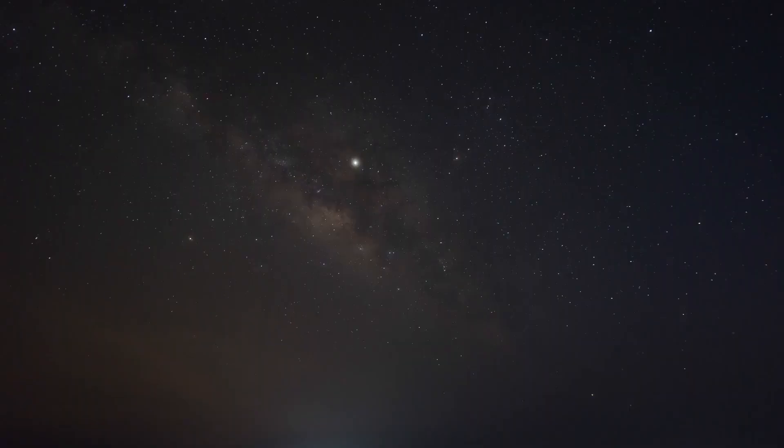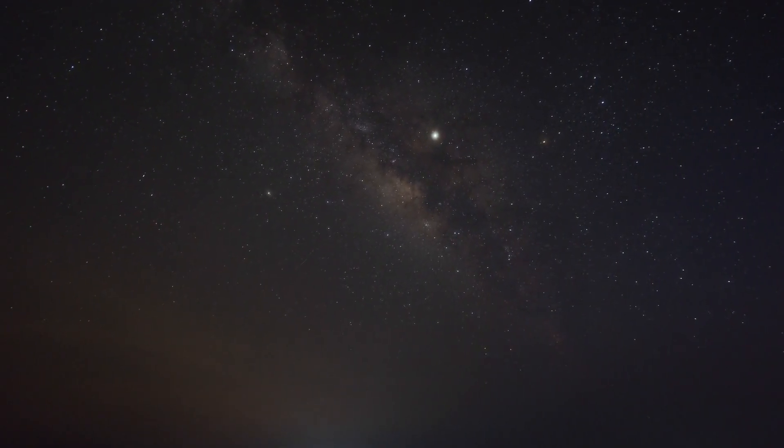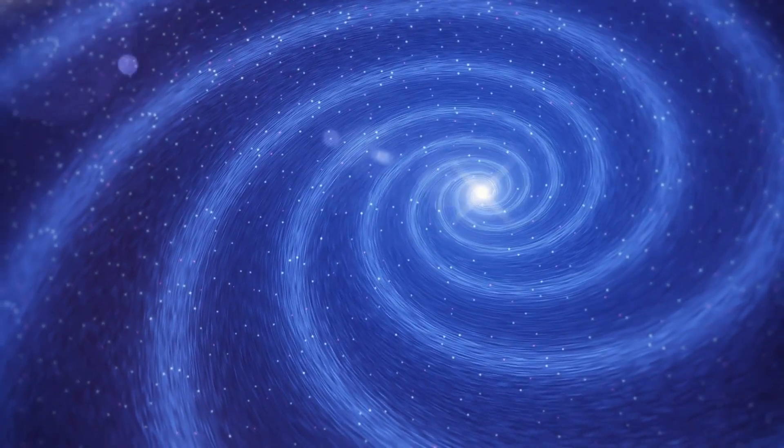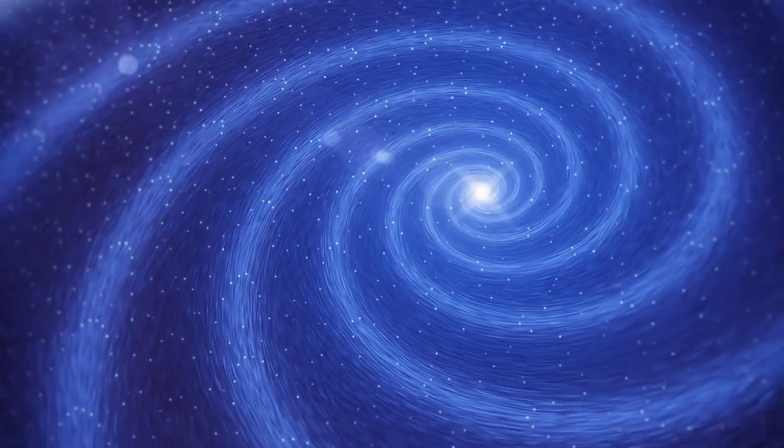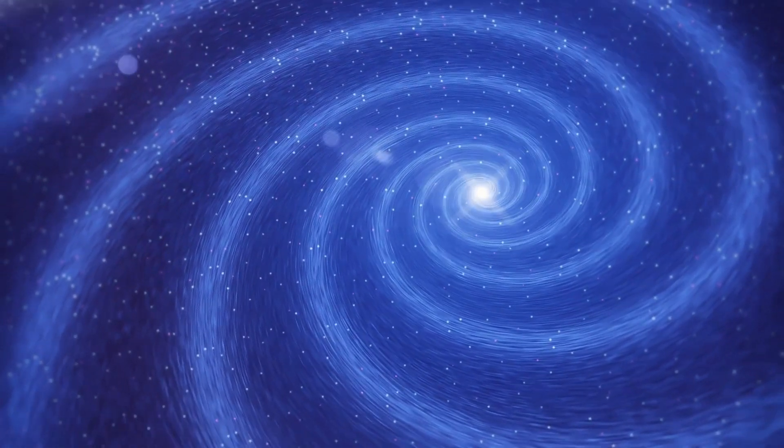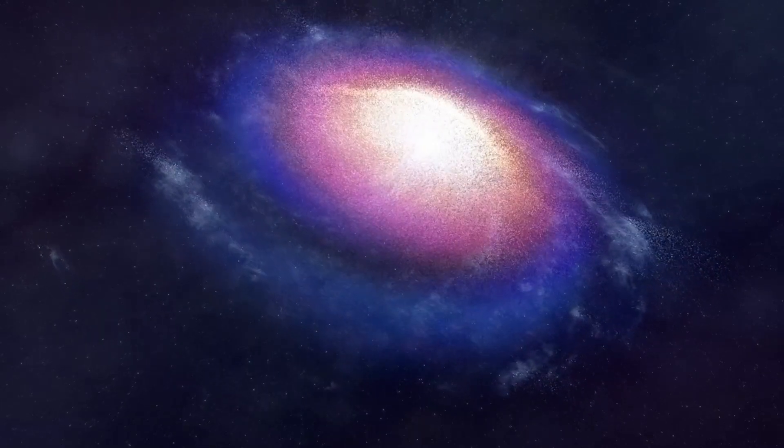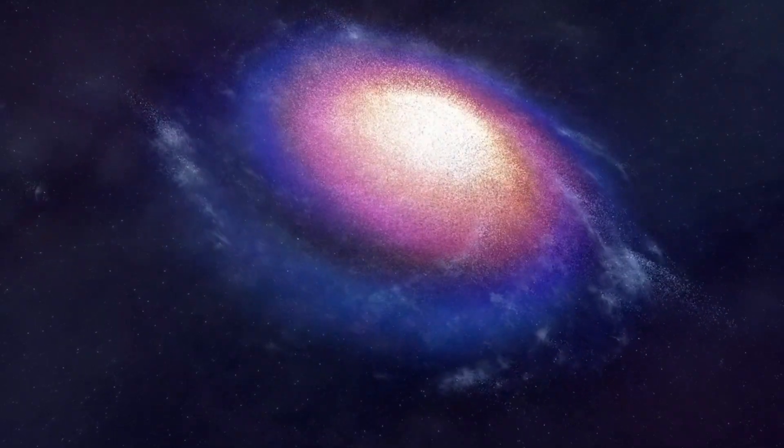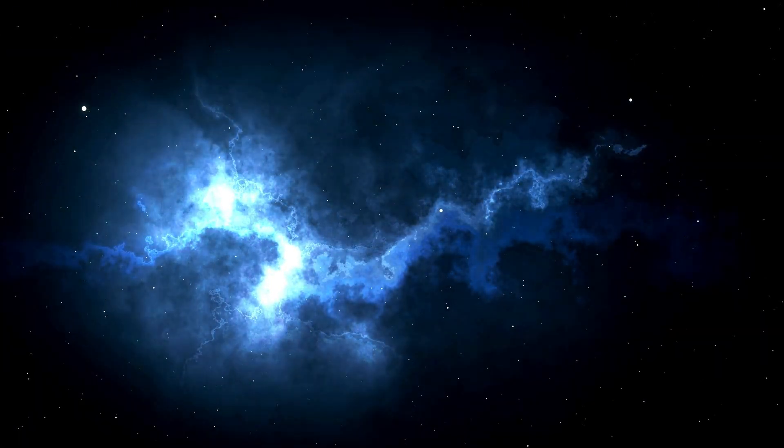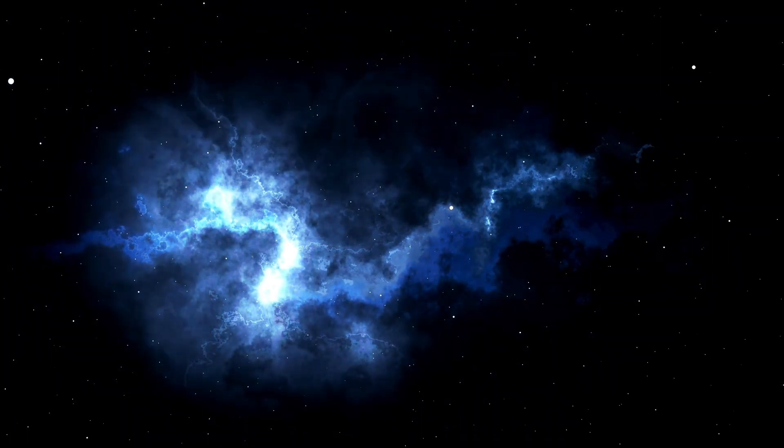The potential for Betelgeuse to become a supernova also intersects with our understanding of cosmic events on a larger scale. For instance, the study of supernovae aids astronomers in examining the circumstances leading to different types of explosions, such as Type I and Type II supernovae. Type I supernovae are typically the result of thermonuclear explosions in binary star systems, while Type II supernovae, like those expected from Betelgeuse, arise from the core collapse of massive stars. Grasping the differences between these events can help researchers unravel the history of our galaxy and the frequency of such occurrences.